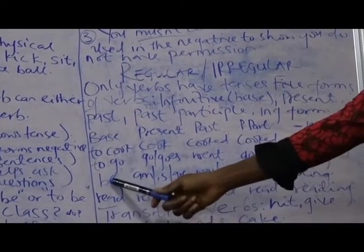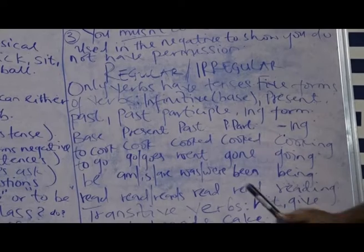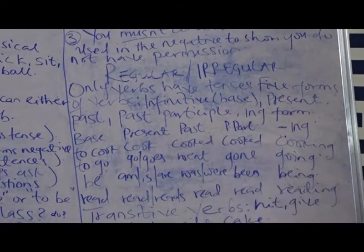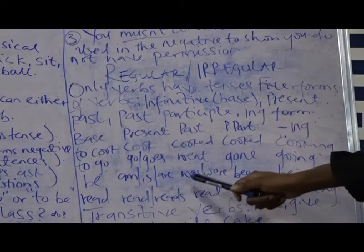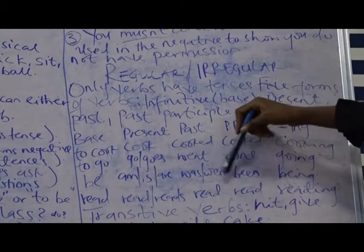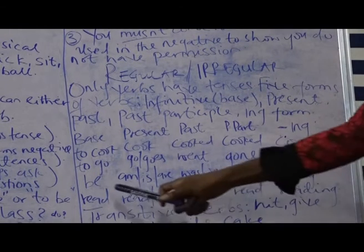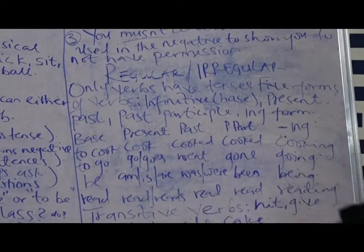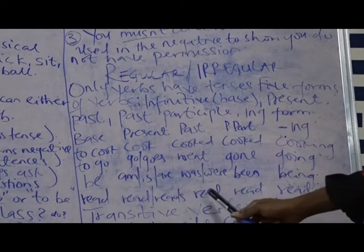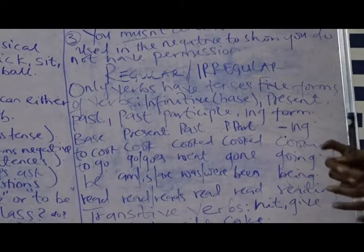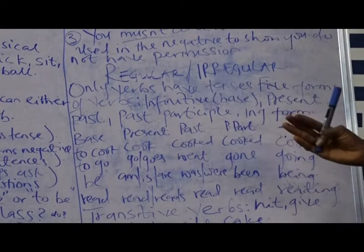Let's look at another one: the verb 'to be.' It has am, is, and are as present tense forms; was and were as the past; been as the past participle; and being as the -ing form. There is an irregular way of conjugating these verbs. Another irregular verb: 'read.' The present tense is 'read' or 'reads,' the past is 'read,' the past participle 'read' — pronounced like the colour red — and the -ing form is 'reading.' So, verbs can be irregular or regular.